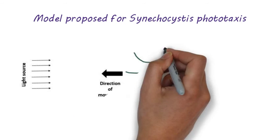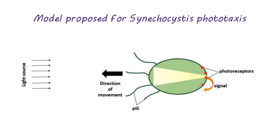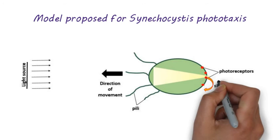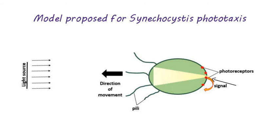Based on the observations, the researchers propose a model for phototactic movement of Synechocystis. When cells encounter a light source, the light source image is focused on the opposite side of the cell membrane from the light source. This image is detected by photoreceptors on the cell membrane.